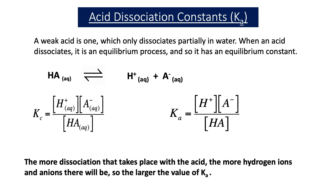In our previous videos, we've introduced the term acid dissociation constant, Ka. A weak acid only partially dissociates in water, and when an acid dissociates, it's an equilibrium process and therefore has an equilibrium constant. Ka is the acid dissociation constant, and if we have a weak acid HA that splits up into H-plus ions and A-minus ions, Ka is equal to the concentration of H-plus ions times the concentration of A-minus ions divided by the concentration of the acid HA. The bigger the value of Ka, the more dissociation that exists.